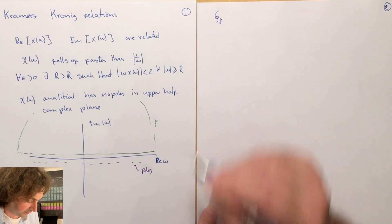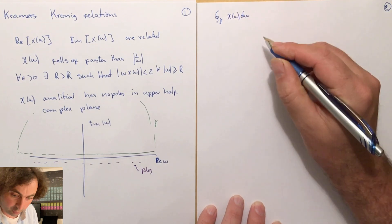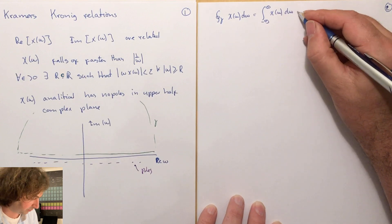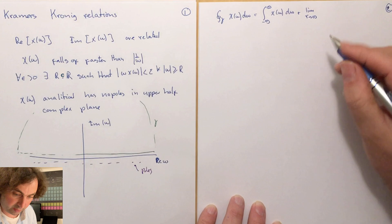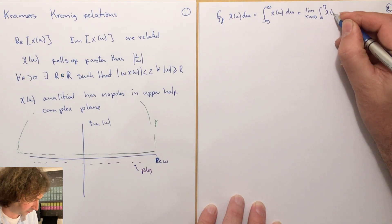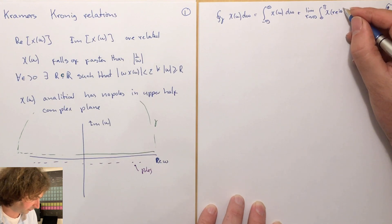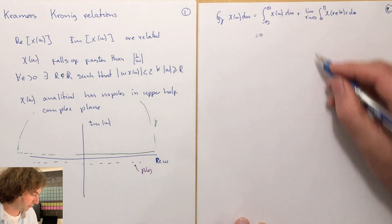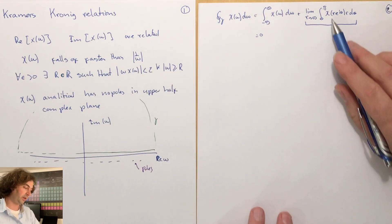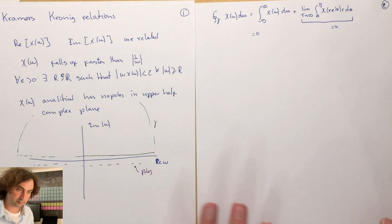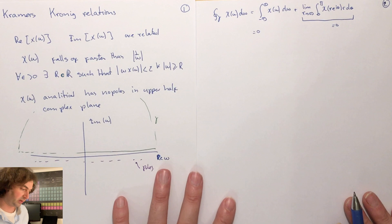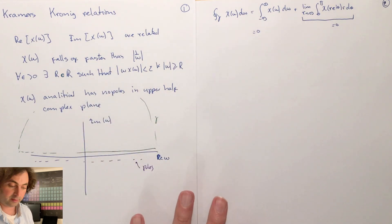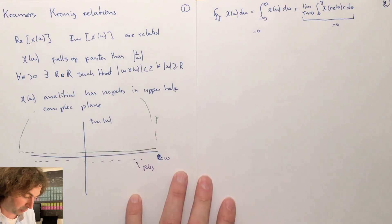What we know is that the contour integral of χ(ω) dω equals the integral from minus infinity to infinity of χ(ω) dω, plus the limit as r goes to infinity of the integral from 0 to π of χ(r·e^{iθ})·r dθ. We know this must be zero, and we also know this second part is zero because χ falls off fast enough. But this alone doesn't give you a relation between the real and imaginary parts yet.